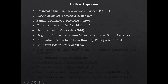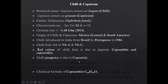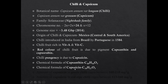Chili fruit is rich in vitamin A and vitamin C. The red color of chili fruit is due to pigments capsanthin and capsorubin. The pungency of chili is due to capsaicin. The chemical formula of capsanthin is C40H56O3, and the chemical formula of capsaicin is C18H27O3. O3 is common; you have to remember C40 for capsanthin and C18 for capsaicin, with H56 and H27 respectively.